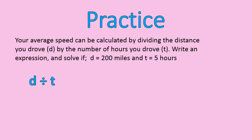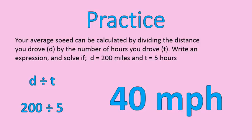Now I'm going to solve it. 200 is my distance, 5 hours is my time — 200 divided by 5 equals 40. When dividing miles by hours, the result is miles per hour. So if I drive 200 miles in 5 hours, I'm going an average of 40 miles per hour.